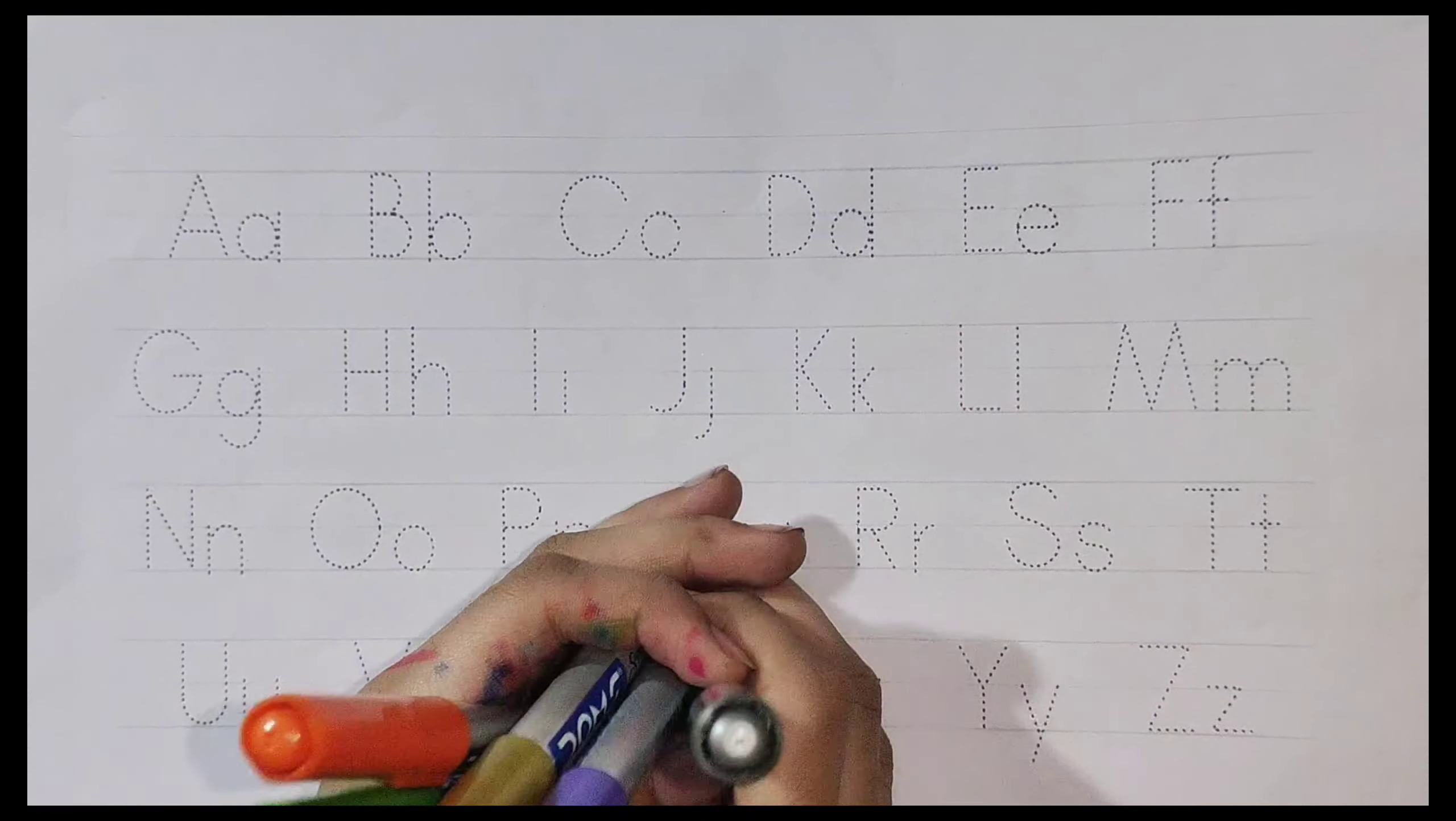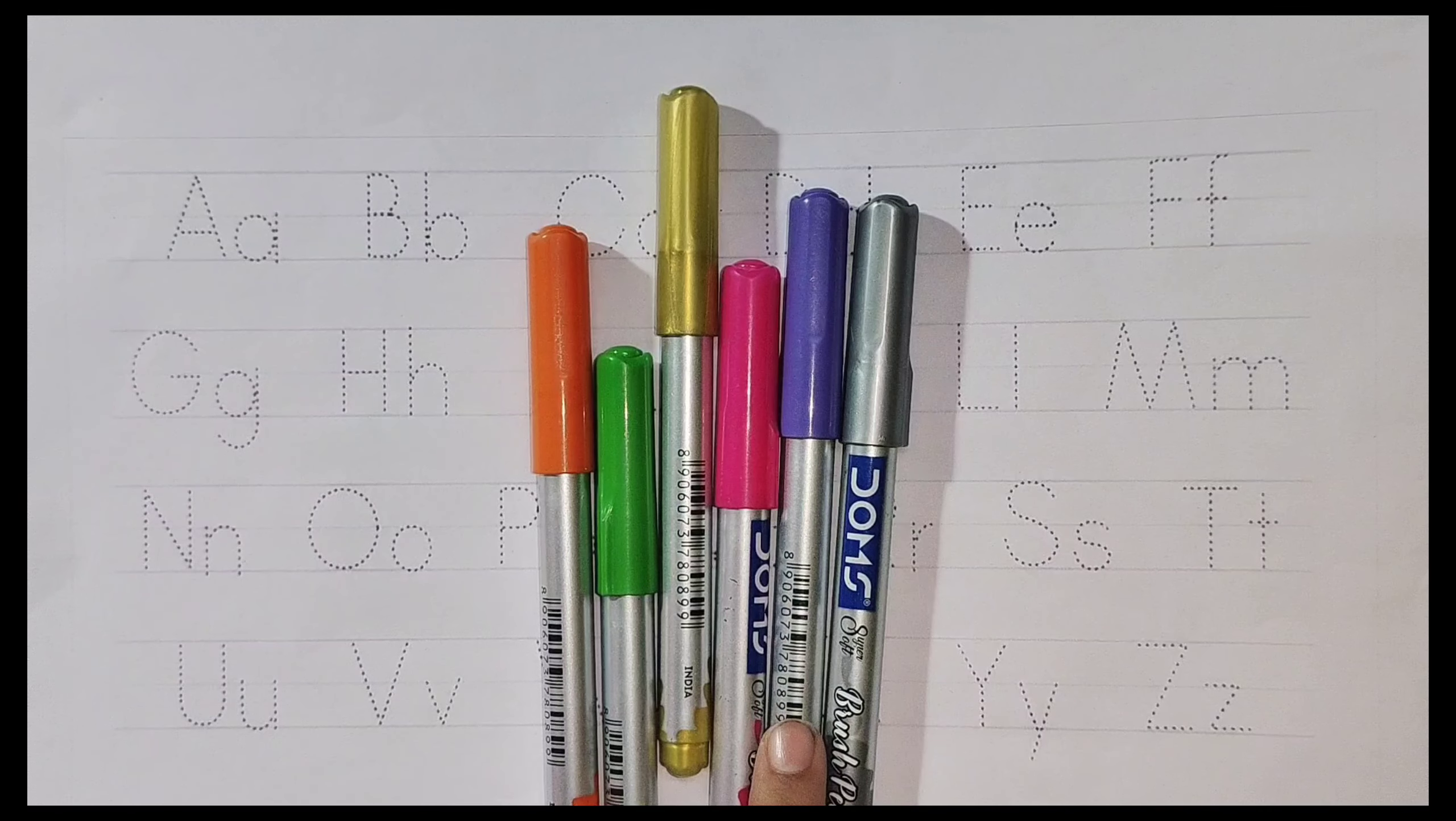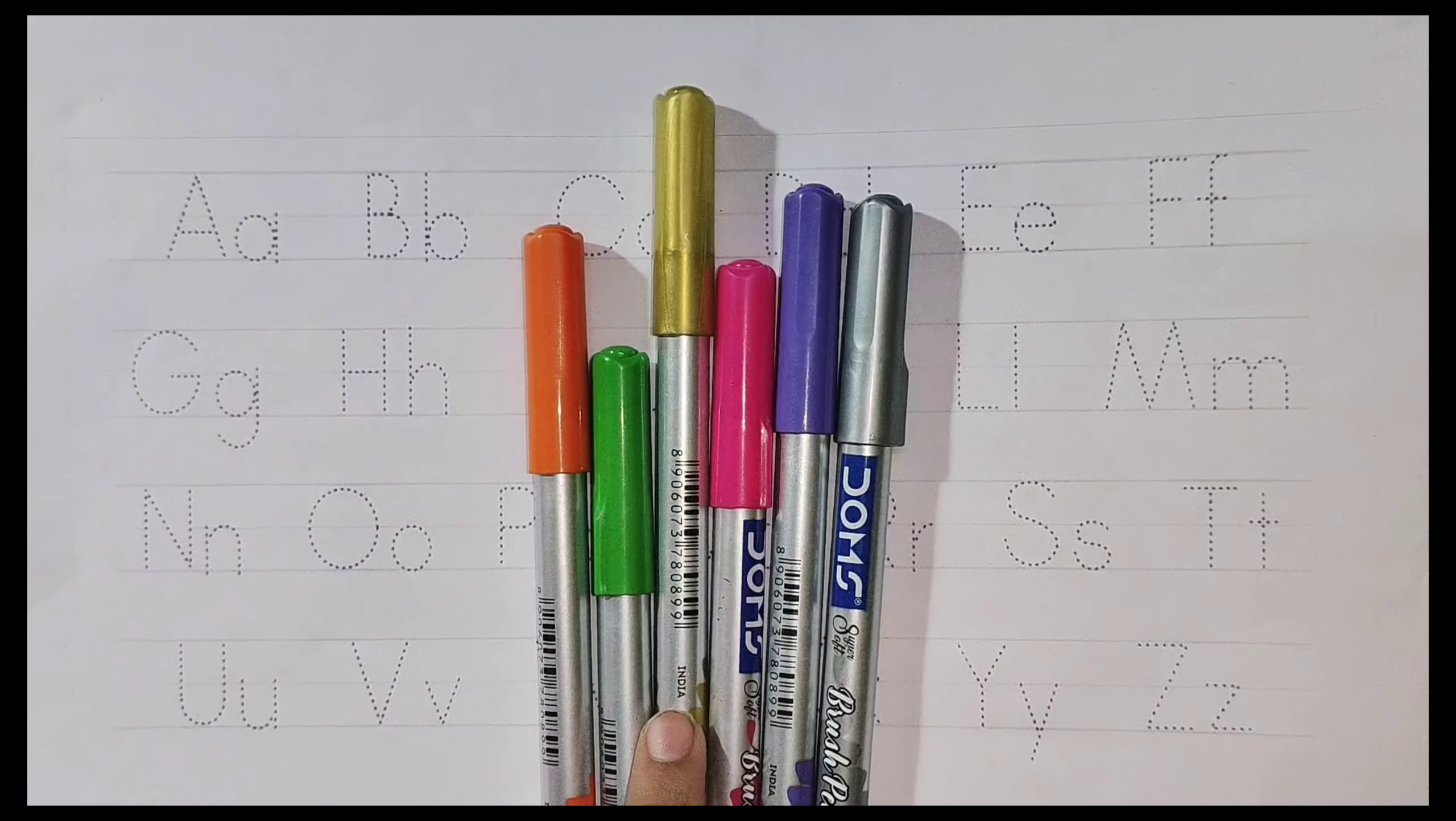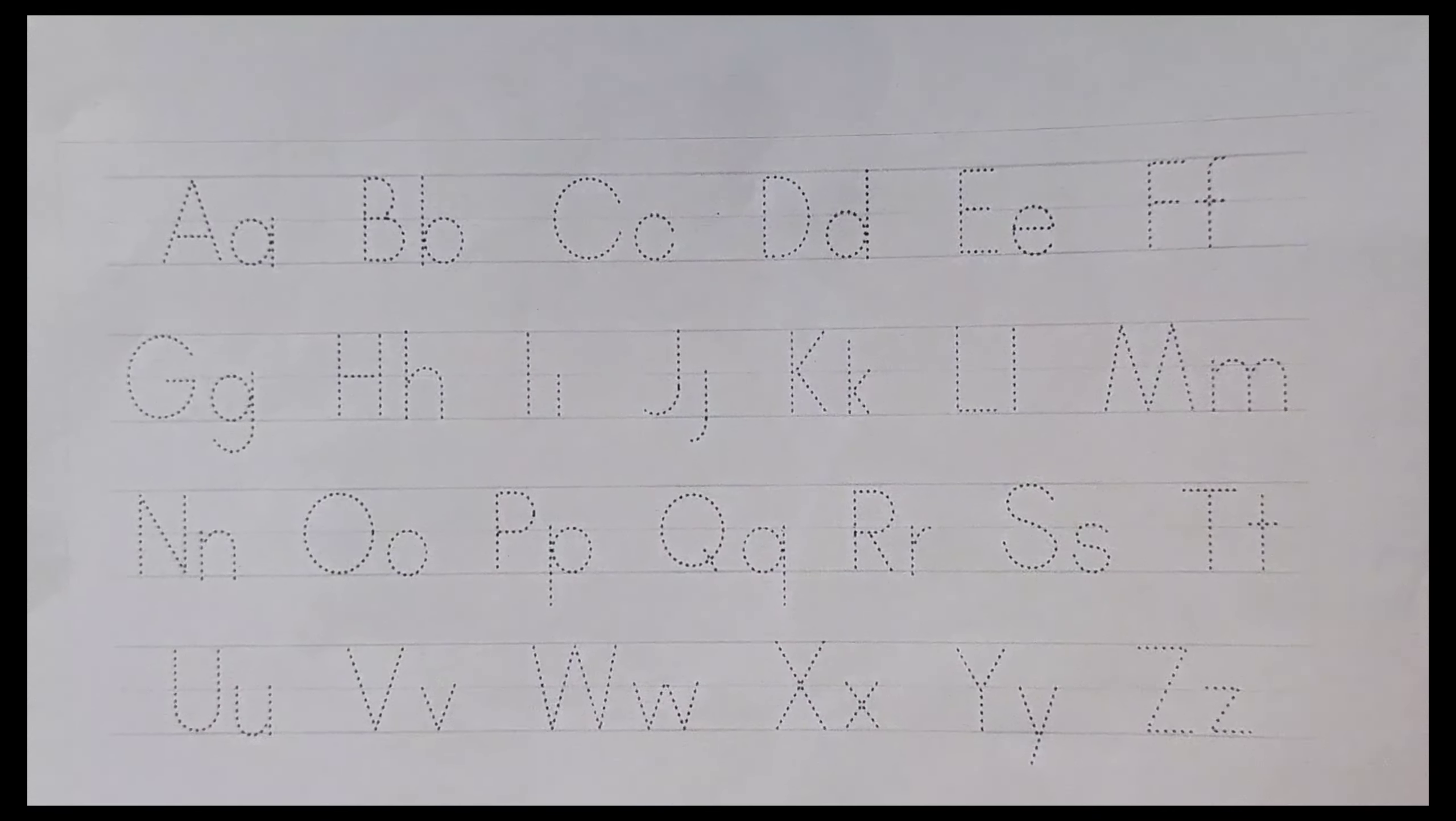Hello Kids! Today we will learn small ABCD and capital ABCD. Let's start with color names. Green color, Orange color, Pink color. Let's start!